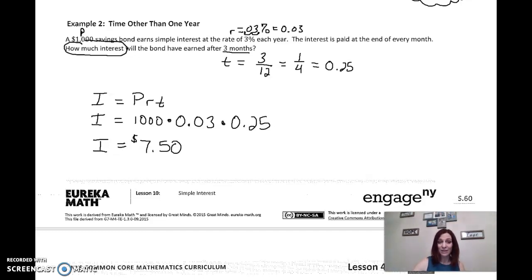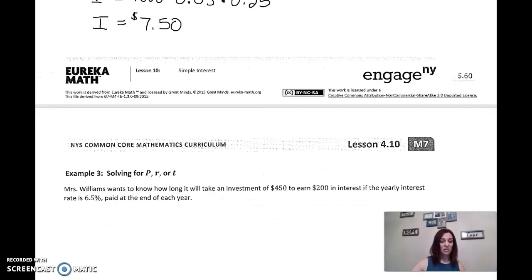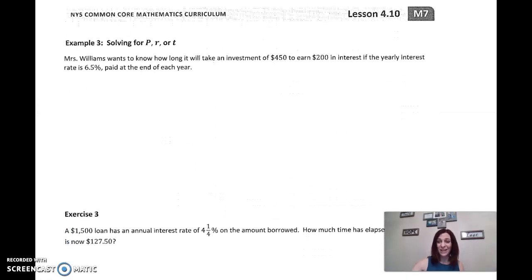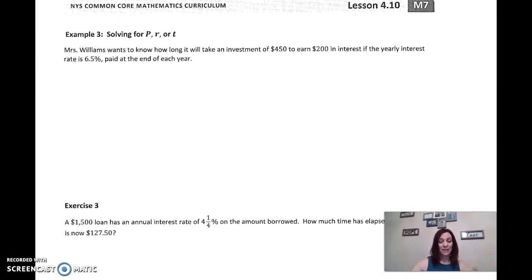Now, if it asks for the balance, I would take $1,000 plus $7.50 and get $1,007.50. But it doesn't in this case, we just have to ask for the interest. All right. So let's just look at a couple more examples. See how we're using the same formula every time, making sure our rate and our time are compatible, and then making sure we know what we're looking for.